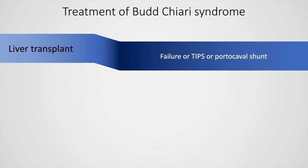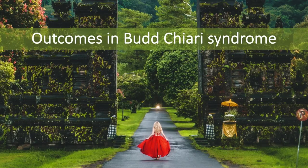Finally, liver transplant would form the definitive management in Budd-Chiari syndrome, especially when there is failure of the TIPS or portocaval shunt, or if there is acute liver failure secondary to Budd-Chiari syndrome.